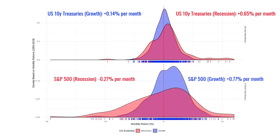If instead we look at equities — in particular the S&P 500 — the pattern is exactly the opposite. During periods of growth, returns on the equity market tend to be stronger. But during a recession the average return is negative, and the distribution of returns grows a large downside tail. In other words, during a recession you're much more likely to have a large negative return, and that drags down the average return for equity.